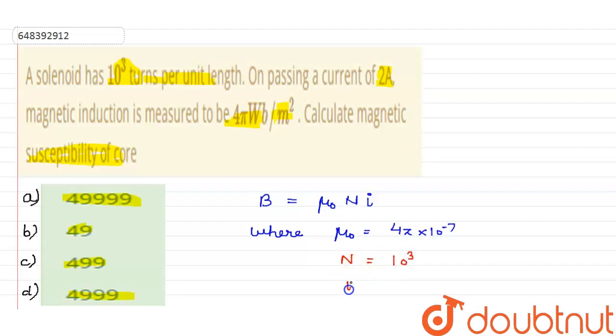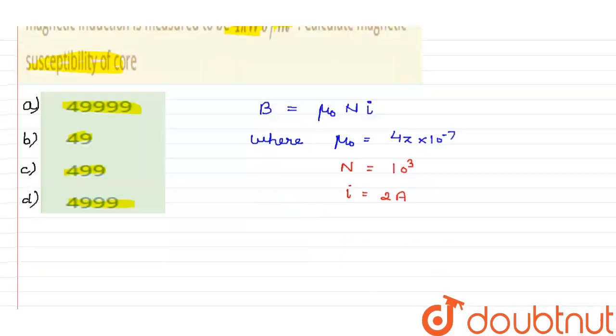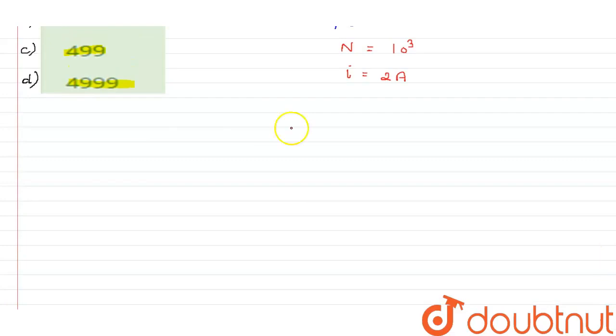And the current i is given to me as 2 ampere. First of all, I need to calculate the value for B. So if I say what should the value of B, then B equals 4π × 10⁻⁷ into number of turns 10³ into i which is 2.